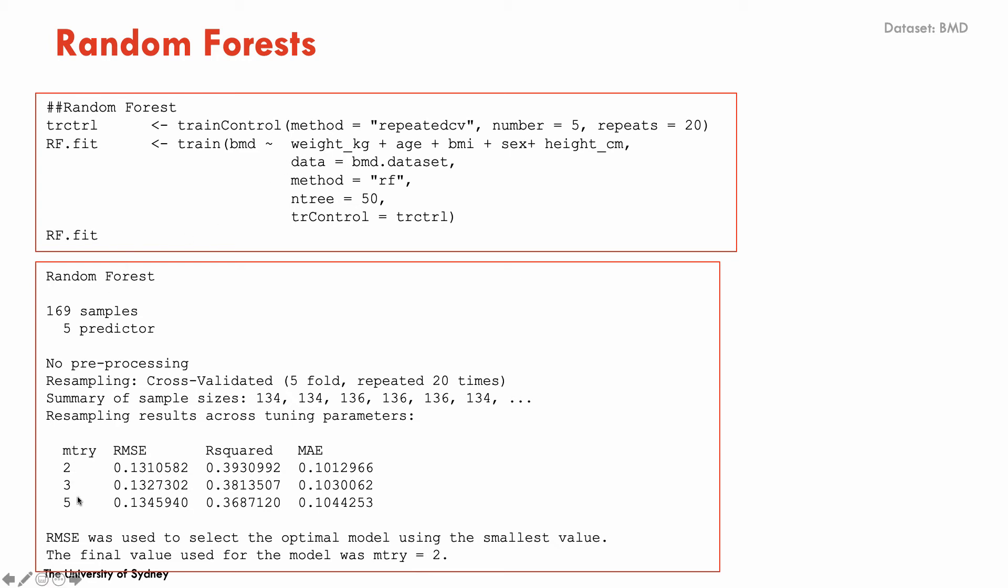But actually, I'm letting the caret do cross-validation and see which one is to be selected. In this case, it's going to be two predictors randomly selected from the set of five predictors that gives it the smallest mean squared error.